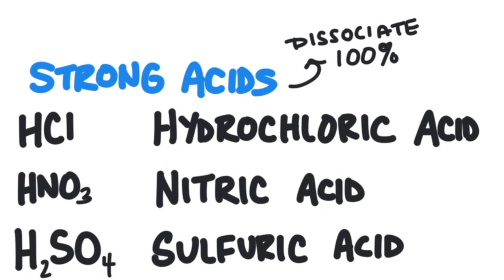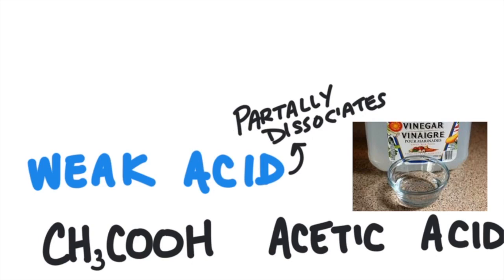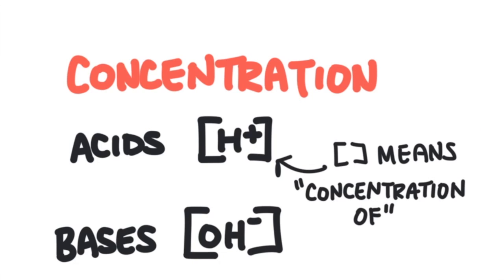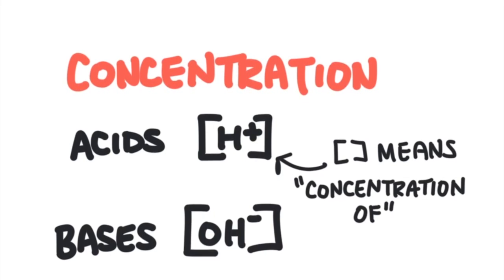Hydrochloric acid, nitric acid, and sulfuric acid are all strong acids because they dissociate completely in water. Acetic acid is a weak acid because it only partially dissociates — when it dissolves, only some of the acetic acid molecules split apart to give hydrogen ions. Remember, strength is not the same thing as concentration; you can still make a highly concentrated solution of a weak acid. With acids we measure the concentration of hydrogen ions, and with bases we measure the concentration of hydroxide ions in solution. Concentration is the moles of hydrogen ions or hydroxide ions per liter of solution.